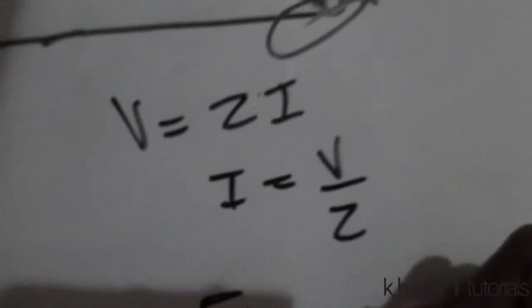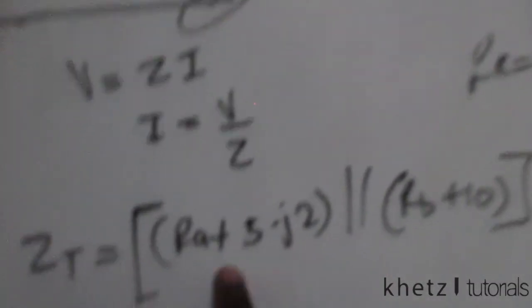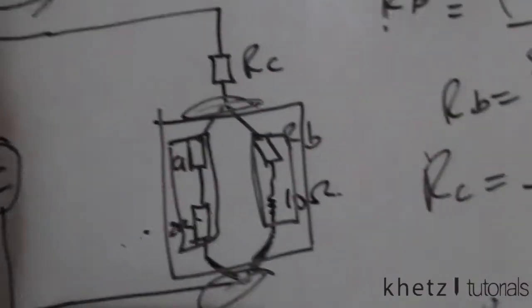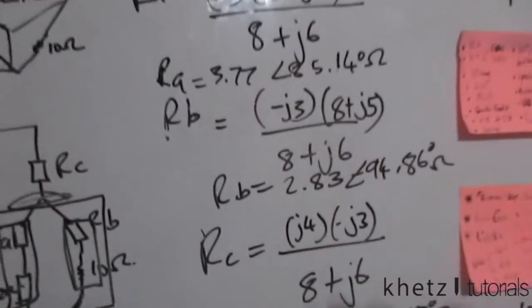The total impedance formula is: Z_total equals RA added to the impedance in series with it, all in parallel with RB plus 10. After finding the parallel combination of those two, the result is one large impedance. This large impedance is then in series with RC, so we add RC to find the total impedance — hence plus RC at the end.